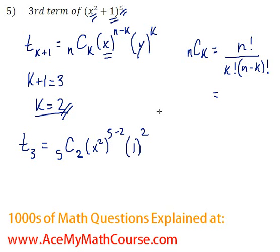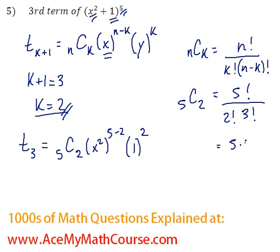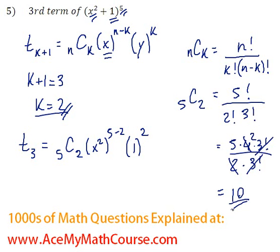So we want to know 5C2, which is equal to 5 factorial all over 2 factorial times 3 factorial. That simplifies to 5 times 4 times 3 factorial, all over 2 times 3 factorial, which simplifies into 10. I went a bit fast through this because we have already done quite a few questions like this on our website under Combinatorics, so we already know that 5C2 is 10.